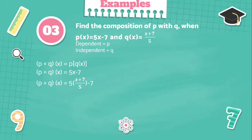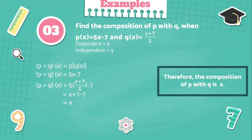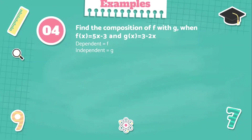Since we can cancel both of the 5s, it will just be x plus 7 minus 7. And since 7 minus 7 equals 0, our answer will be x. Therefore, the composition of p with q is x.